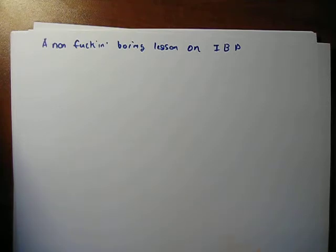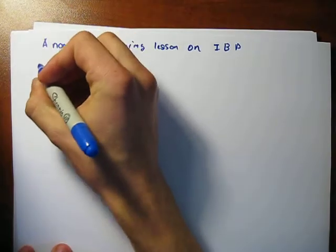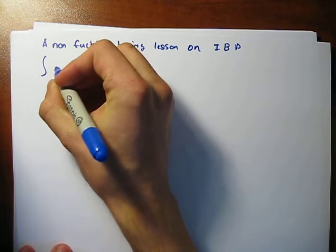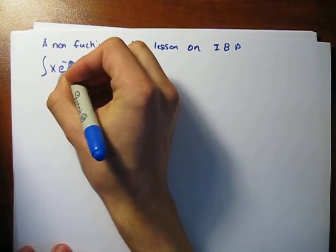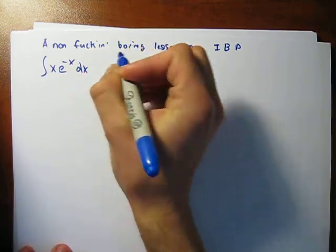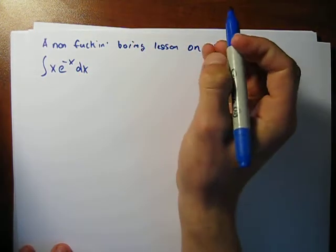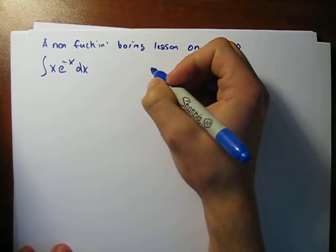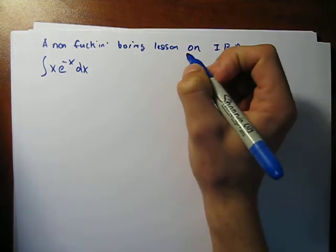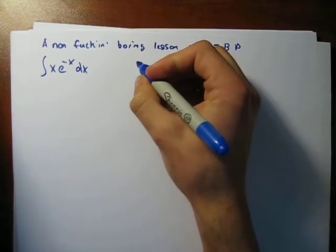But basically, yeah, a rundown of IBP, integration by parts. You need an integral. So, integral of xe to the negative x dx. Integral of sex. Lame joke, whatever. If you laughed, cool. If you didn't, well, yeah, don't think less of me. I'm a 21-year-old guy. What do you want?